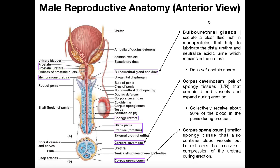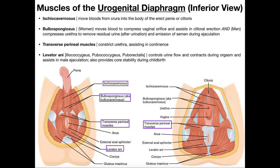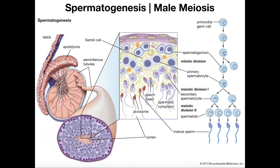Hopefully this video gave you a good understanding of this part of male reproductive anatomy. In the next video we'll look at the urogenital diaphragm, then spermatogenesis, and then a few more videos before moving on to the female reproductive system, which is arguably a lot more complex than the male version.